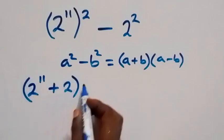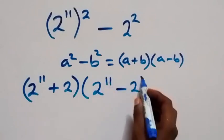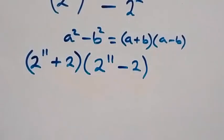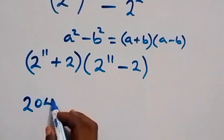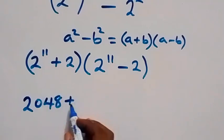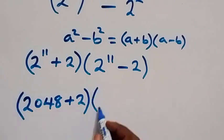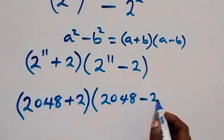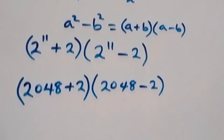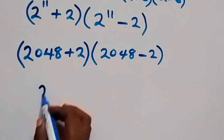Now, 2 raised to power 11 gives us 2048. So we have 2048 plus 2, then multiplied by 2048 minus 2. In the next step, when we sum this together, this gives us 2050 multiplied by 2046.